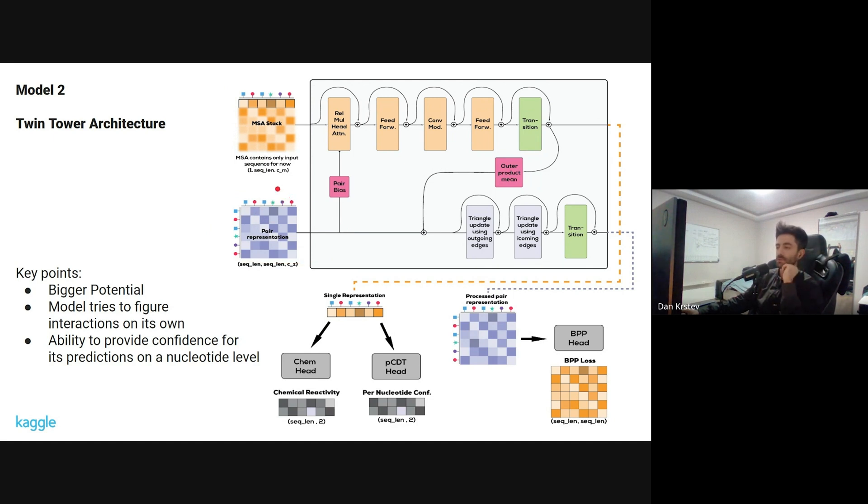So the way AlphaFold works is it has two different pathways, and they're communicating between each other through outer product mean and two-pair biasing. The way the data flows from the beginning up until the end is we have the input sequence, then the input sequence is passed through embedding networks. The MSA embedding network is just a simple embedding layer, and the pair representation network is, we encode 2D relative positional encodings into this representation. And the encodings are capped up until the 32 positions, so after the 32nd position everything else is just considered as far away.